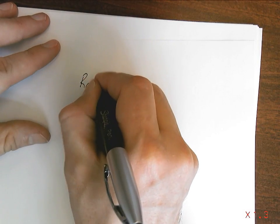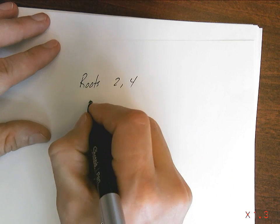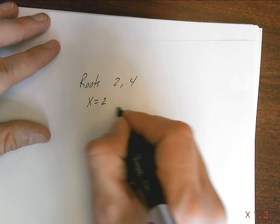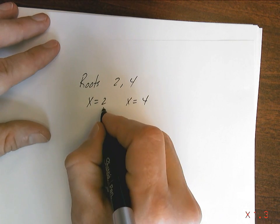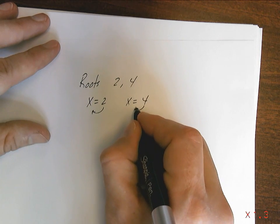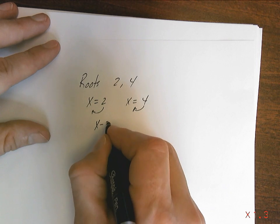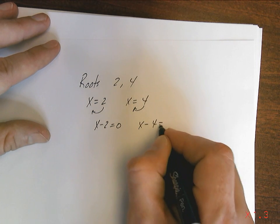So if I tell you that the roots are 2 and 4, then I'm going to tell you that at some point it was x equals 2, and it was x equals 4. And if I bring this 2 over to the other side and bring that 4 over to the other side, it becomes x minus 2 equals 0, and x minus 4 equals 0.